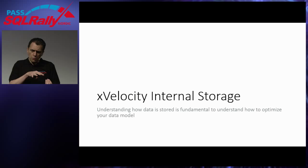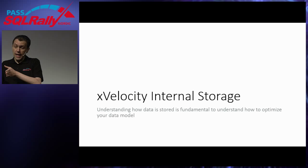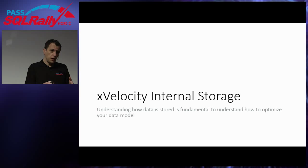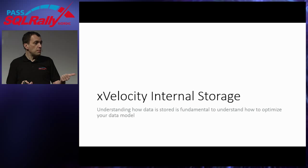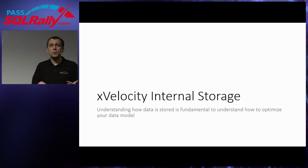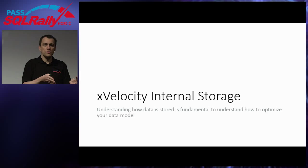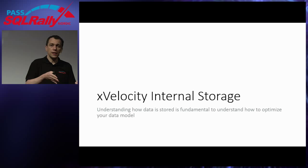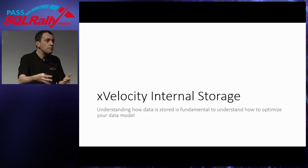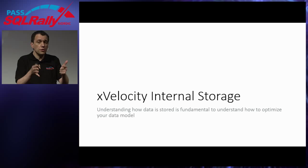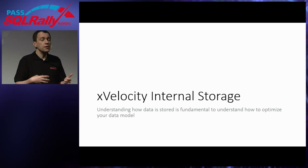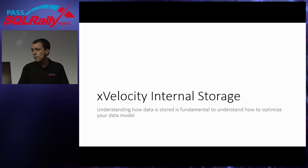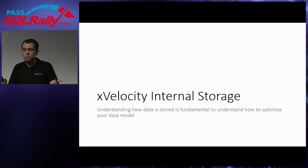Data are stored in memory in a compressed way. When you query data, the engine does not have an uncompressed view — it always scans memory for data that is still compressed. Understanding how compression happens in memory helps us provide data that can have better compression. If you compress data more, you spend less RAM, can store more data in the same memory, and usually obtain better query performance — because having the same rows in less memory means less RAM access. High compression is a win-win.